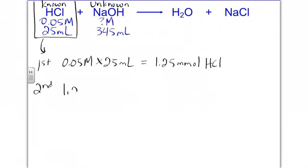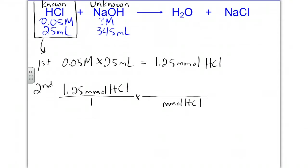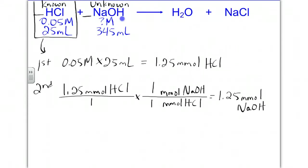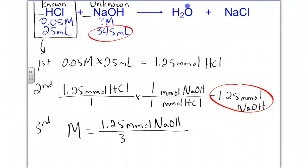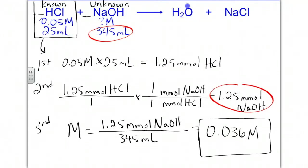Next, we take our 1.25 millimoles of hydrochloric acid over 1 and stoic from hydrochloric acid to sodium hydroxide. It's a 1-to-1 ratio, so we get 1.25 millimoles of sodium hydroxide. Finally, molarity equals 1.25 millimoles of sodium hydroxide divided by 345 milliliters, which gives us 0.036 molar sodium hydroxide.